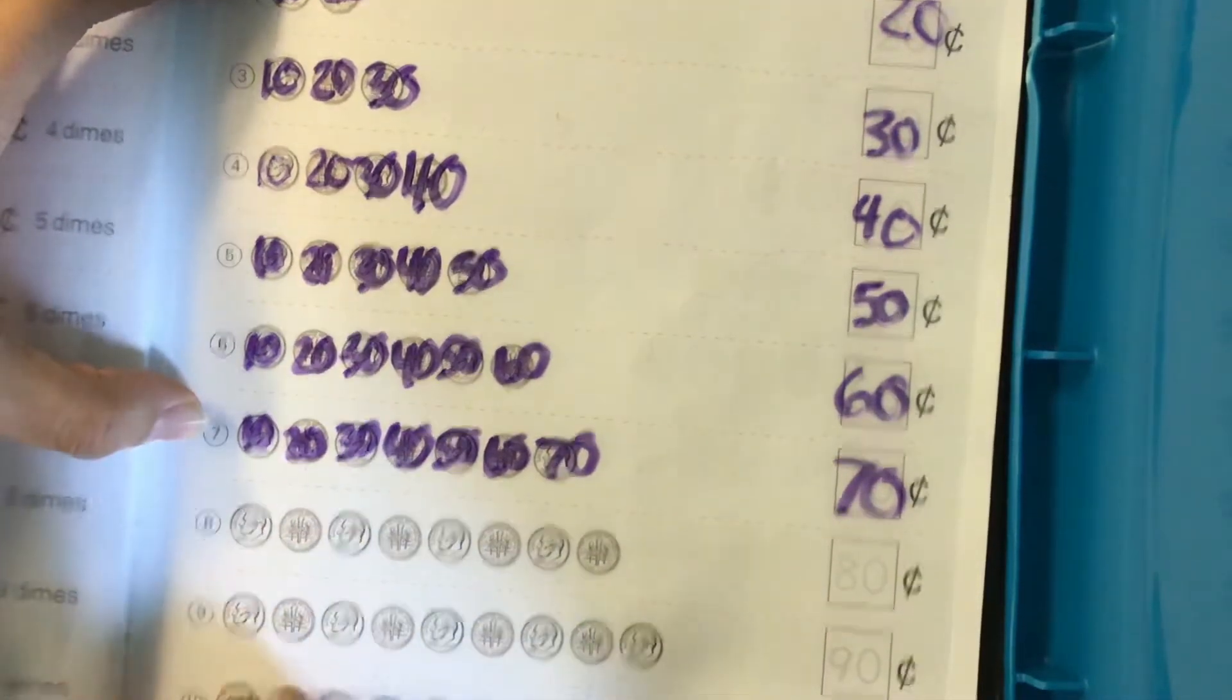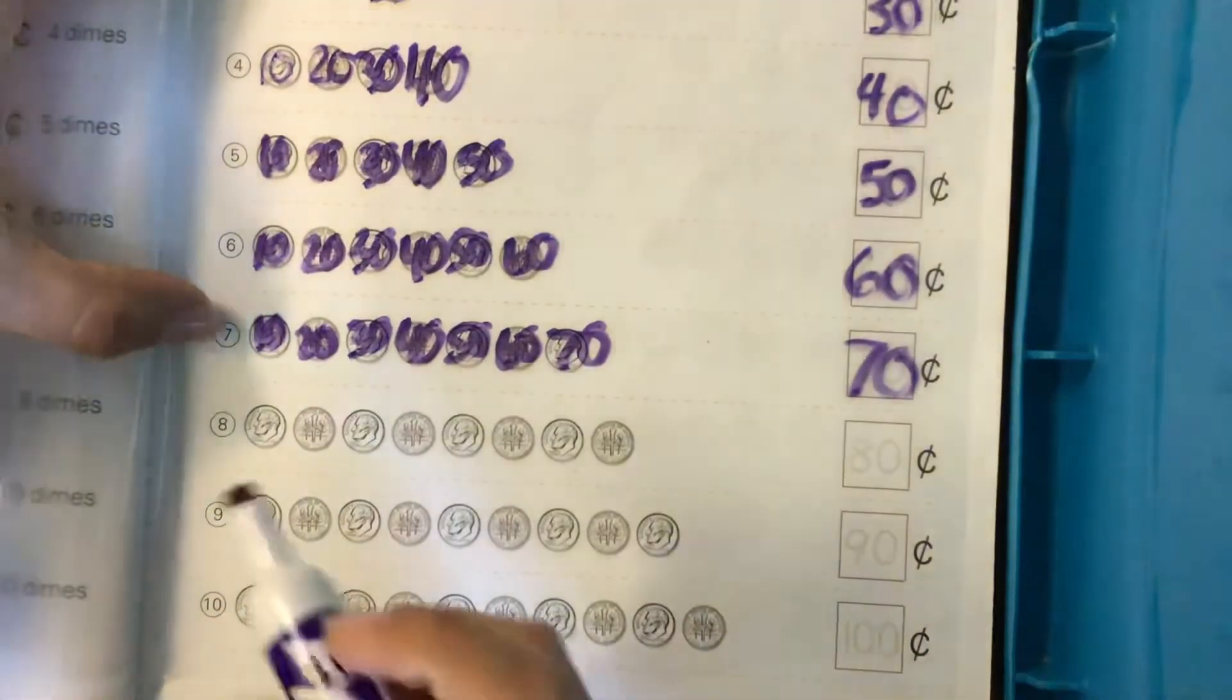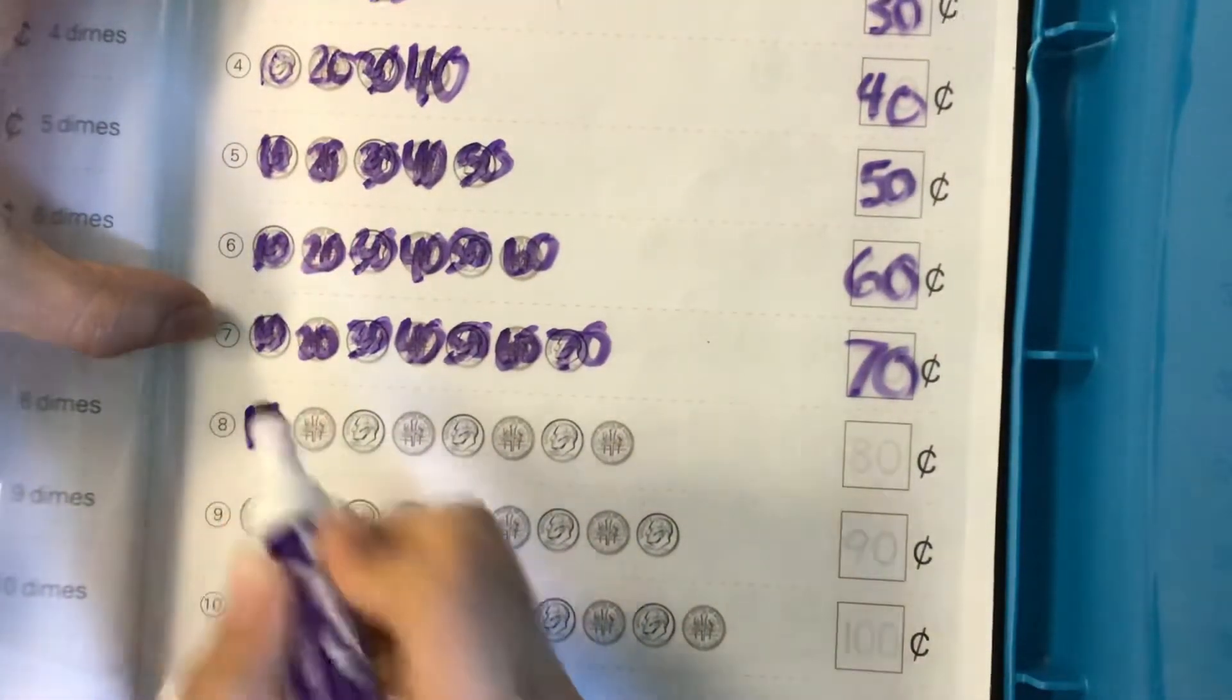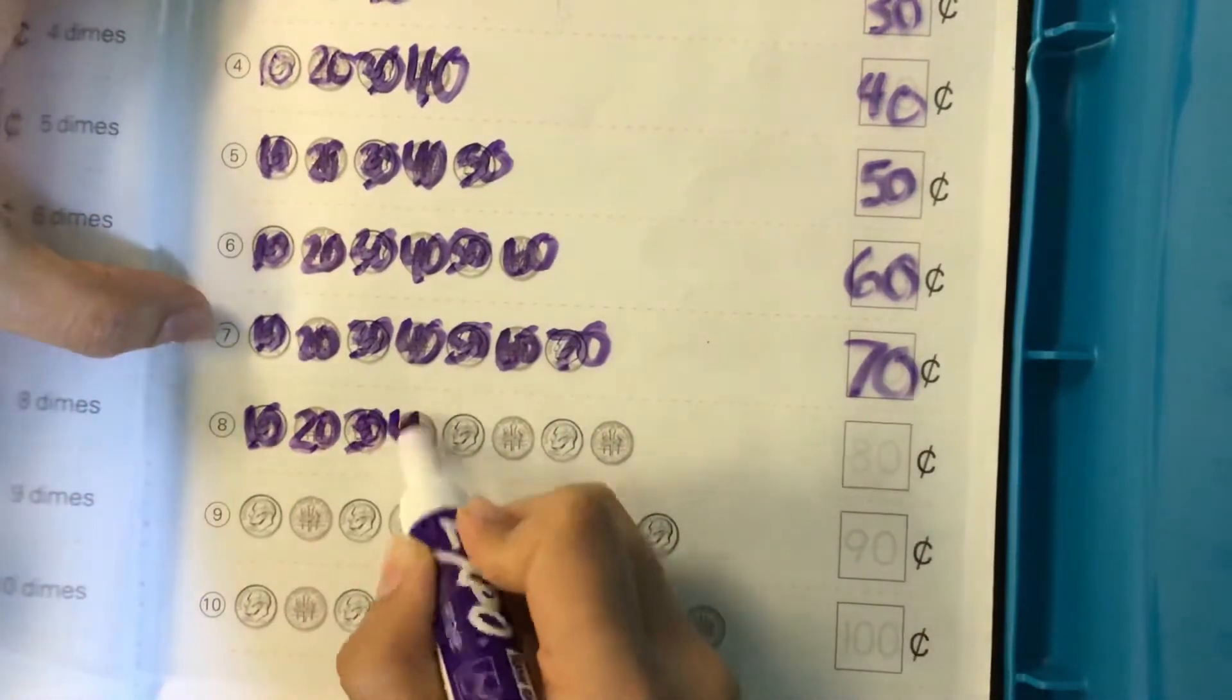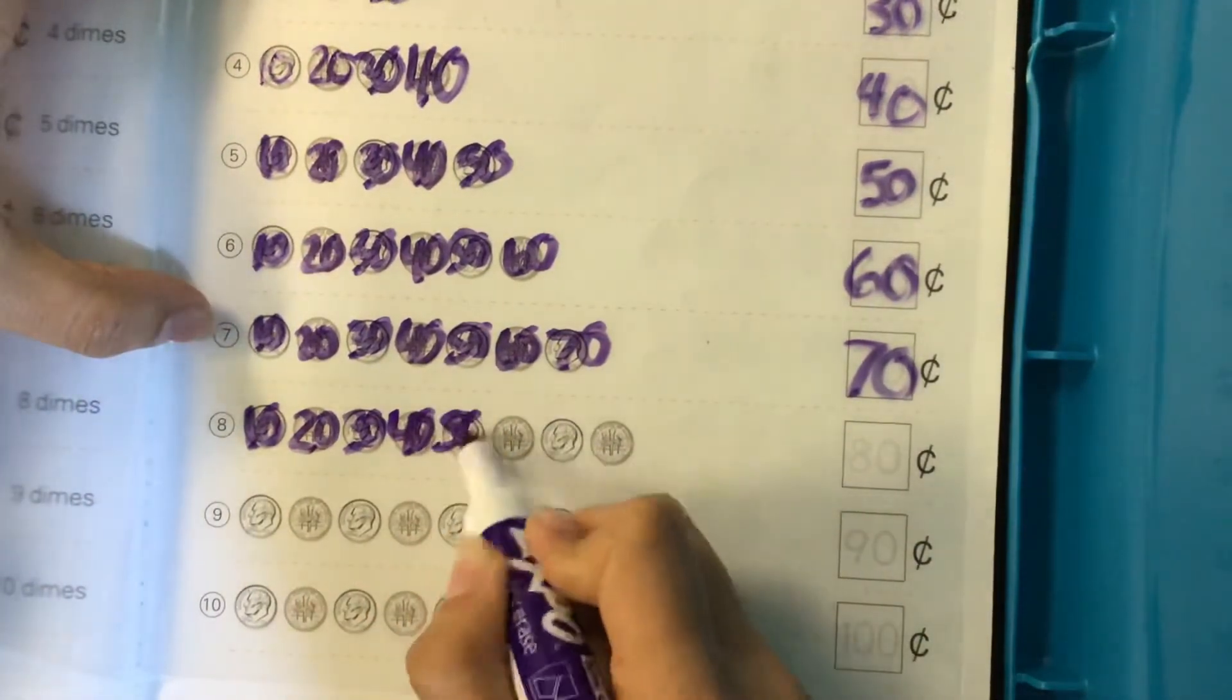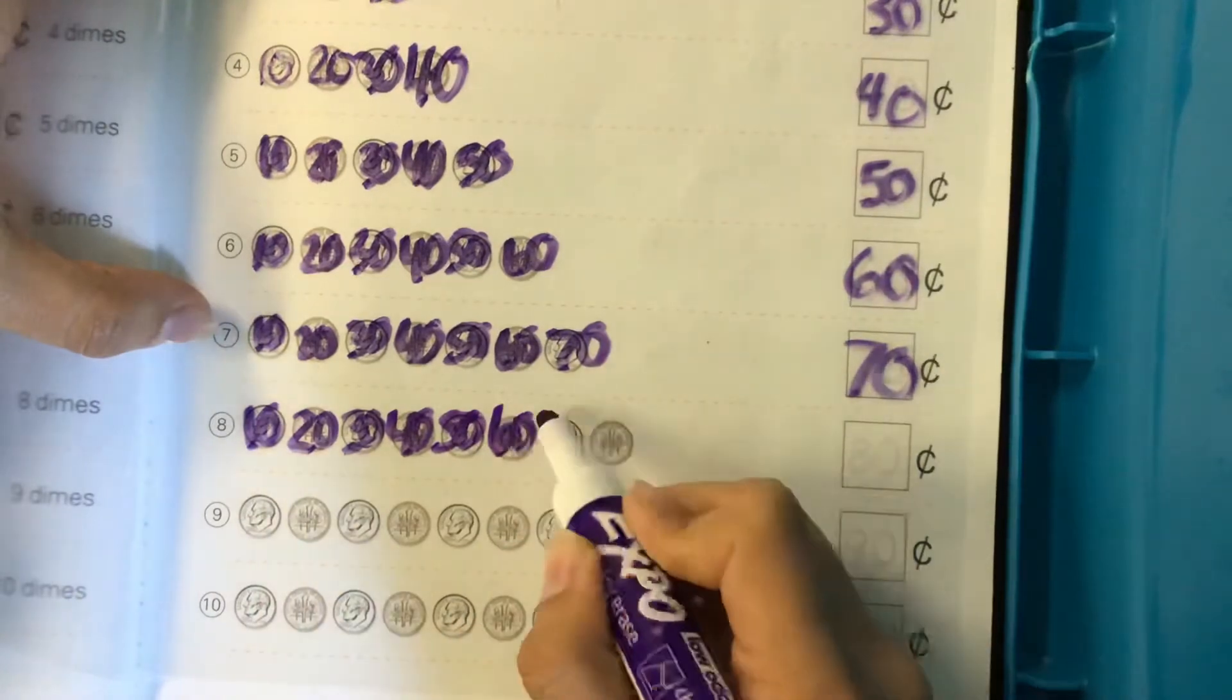Let's do eight, nine, and ten. So let's skip count. Ten, twenty, thirty, forty, fifty, sixty, seventy,